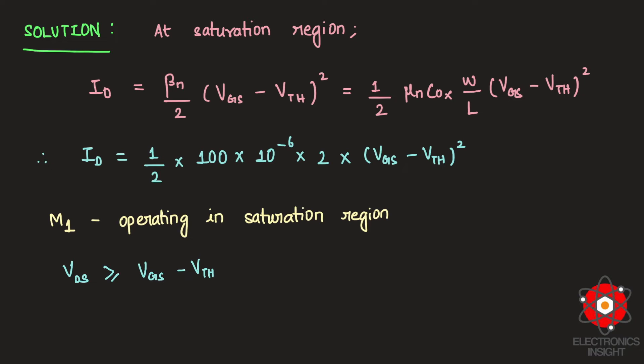We know that VDS for an NMOS transistor is approximately equivalent to Vout because we write it as VD minus VS where the source of NMOS is completely grounded and the drain of NMOS is connected to the output terminal.